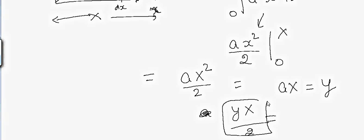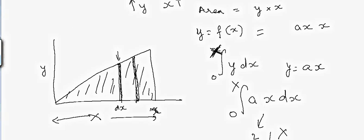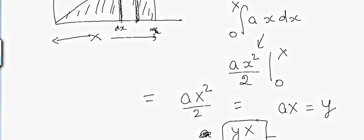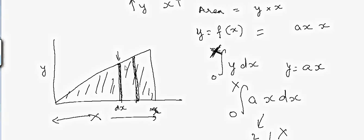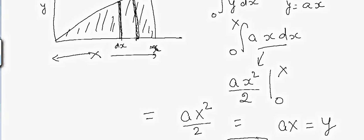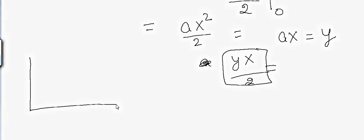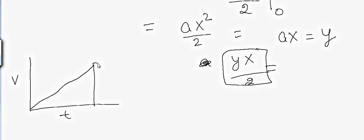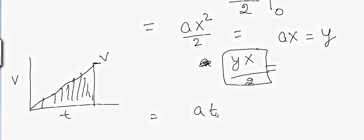This is the use of calculus — you define each small strip, assume y is constant within that strip, express everything in terms of x, integrate, and calculate the area. Similarly, suppose you have velocity on one axis and time on the other, and a car is accelerating and reaches a particular velocity. The question is: how much distance has it traveled during this time?